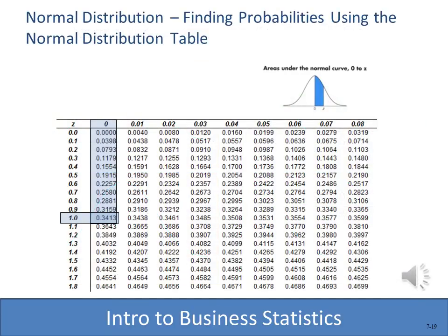Your textbook likely has a normal distribution table — in this particular textbook it's on the very back cover and in Appendix B1. Looking up Z = 1.0 in the table, the probability is 0.3413. Multiplying by 2 gives approximately 68%, confirming that plus or minus one standard deviation covers 68% of all values.